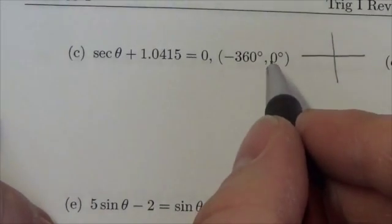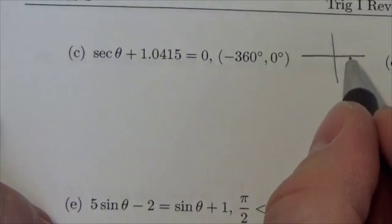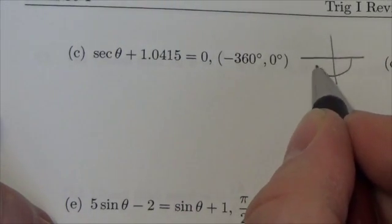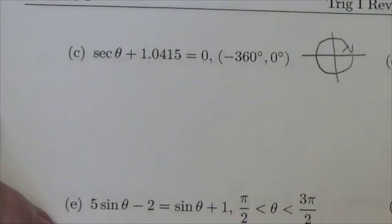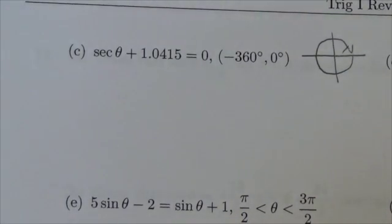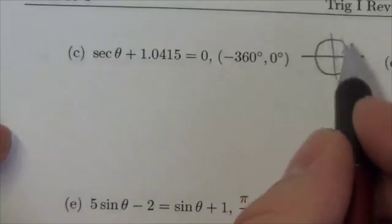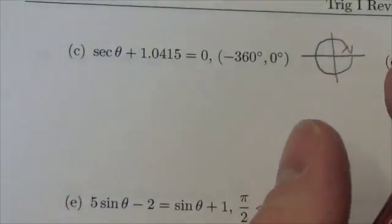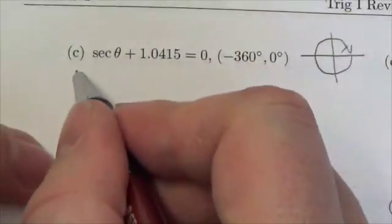We're going from zero degrees all the way through to negative 360, meaning we start at zero and go all the way around a full negative rotation. This is the domain in which we'll be finding our angles.